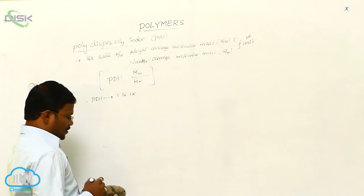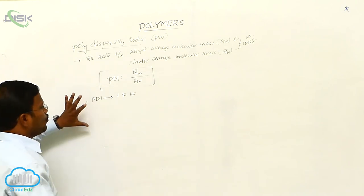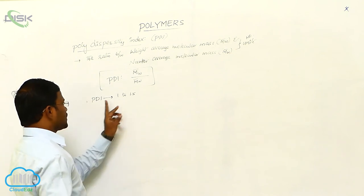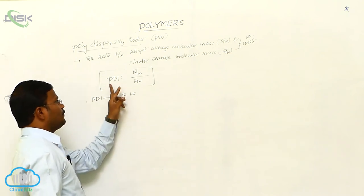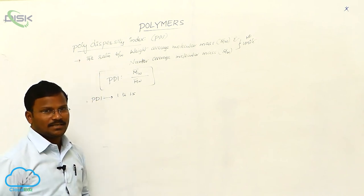The unit quantity will be identified with more amount of polymers. Synthetic polymers generally consist of unit quantity of PDI value. So, this is called as polydispersity index.